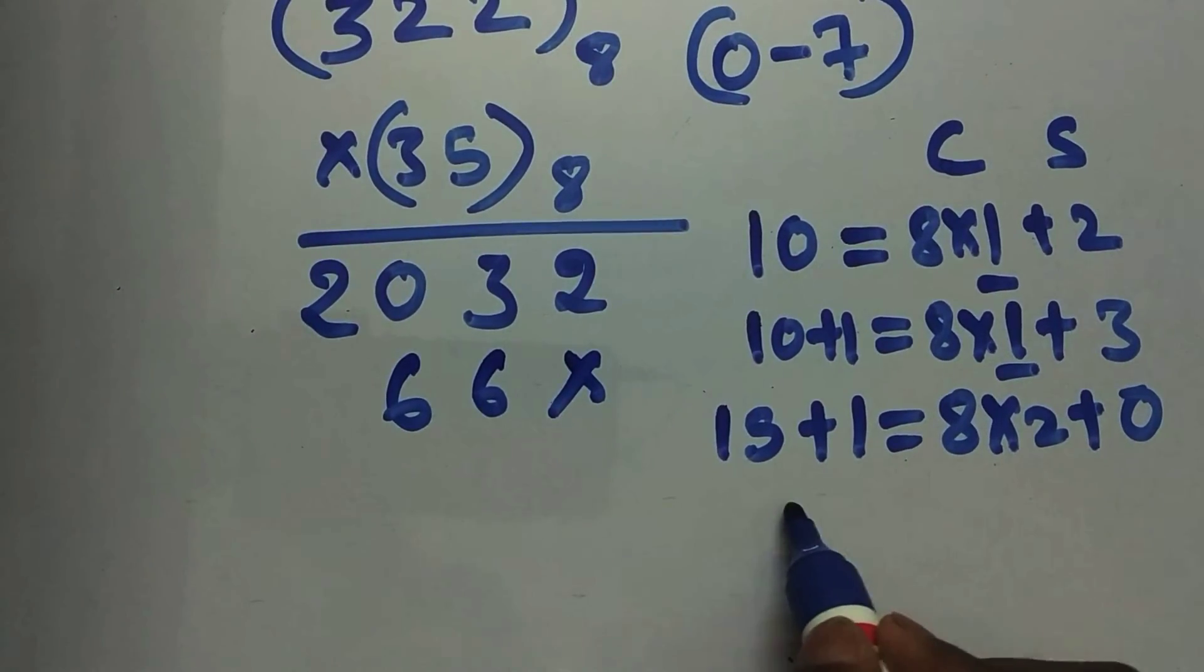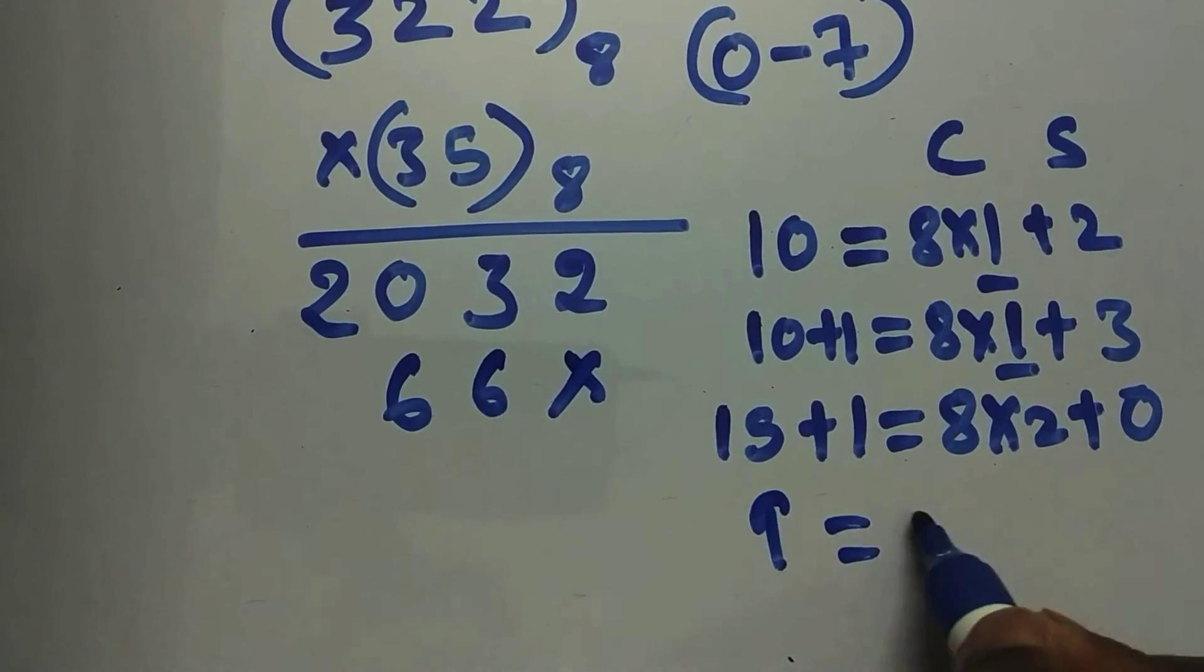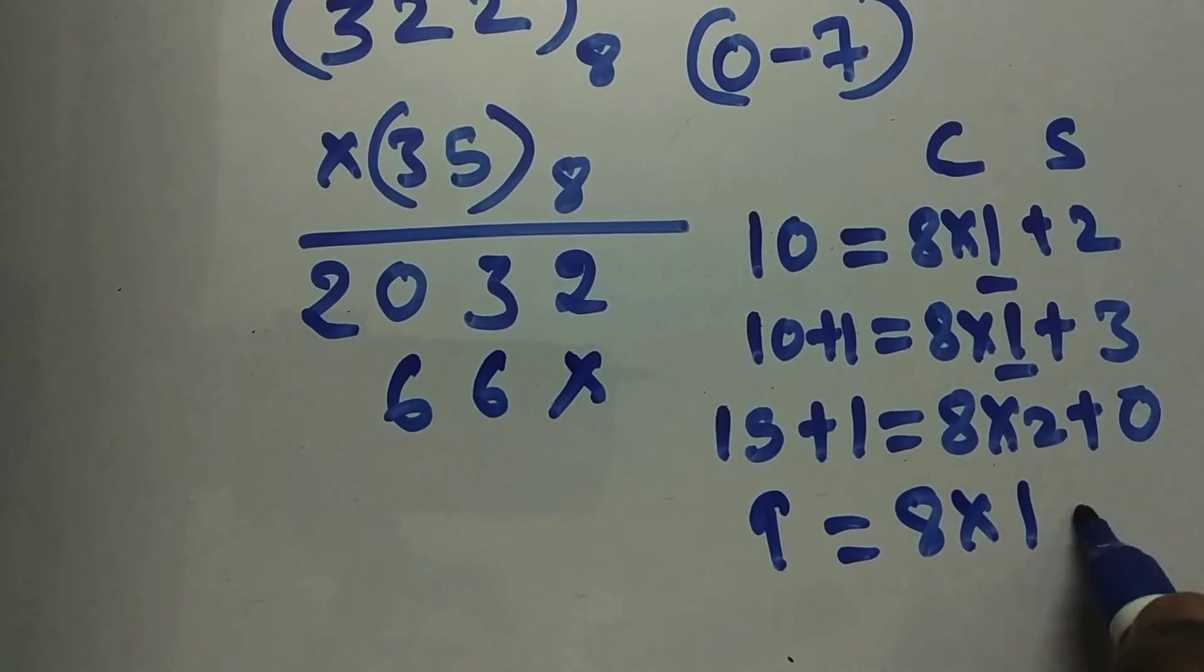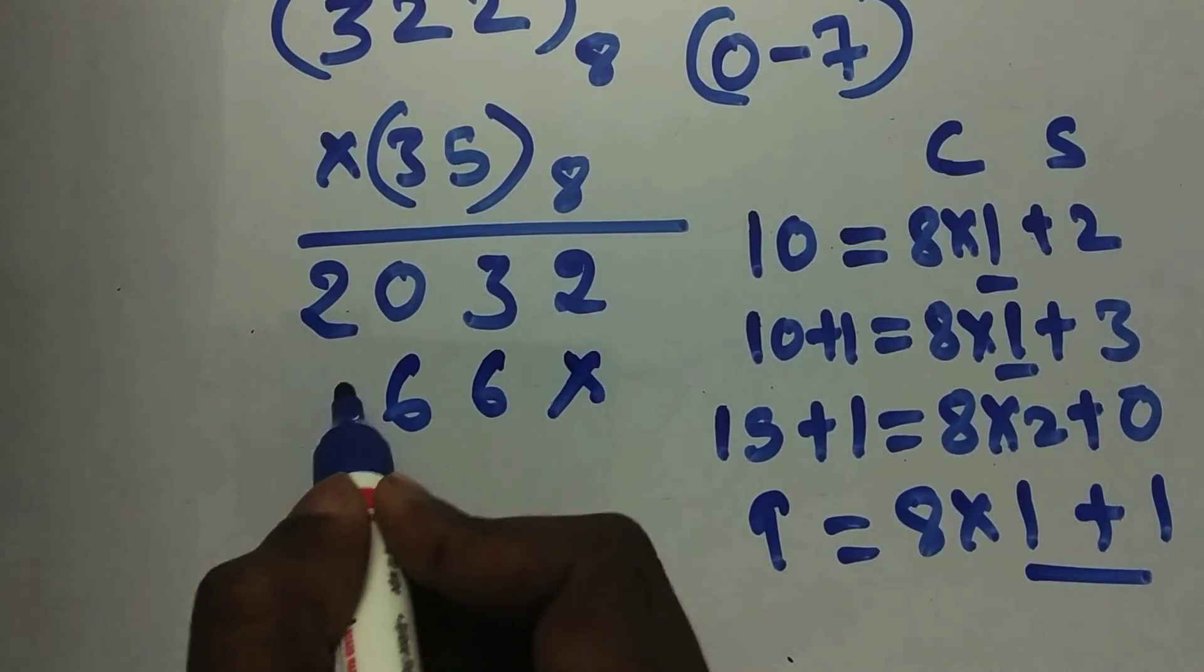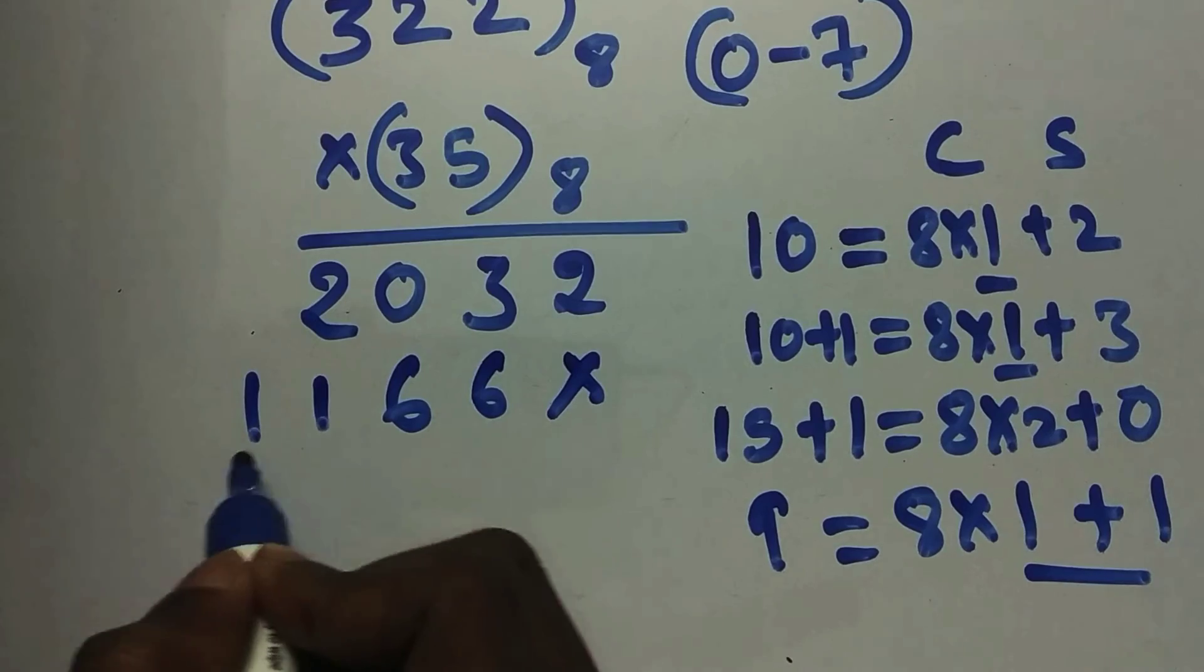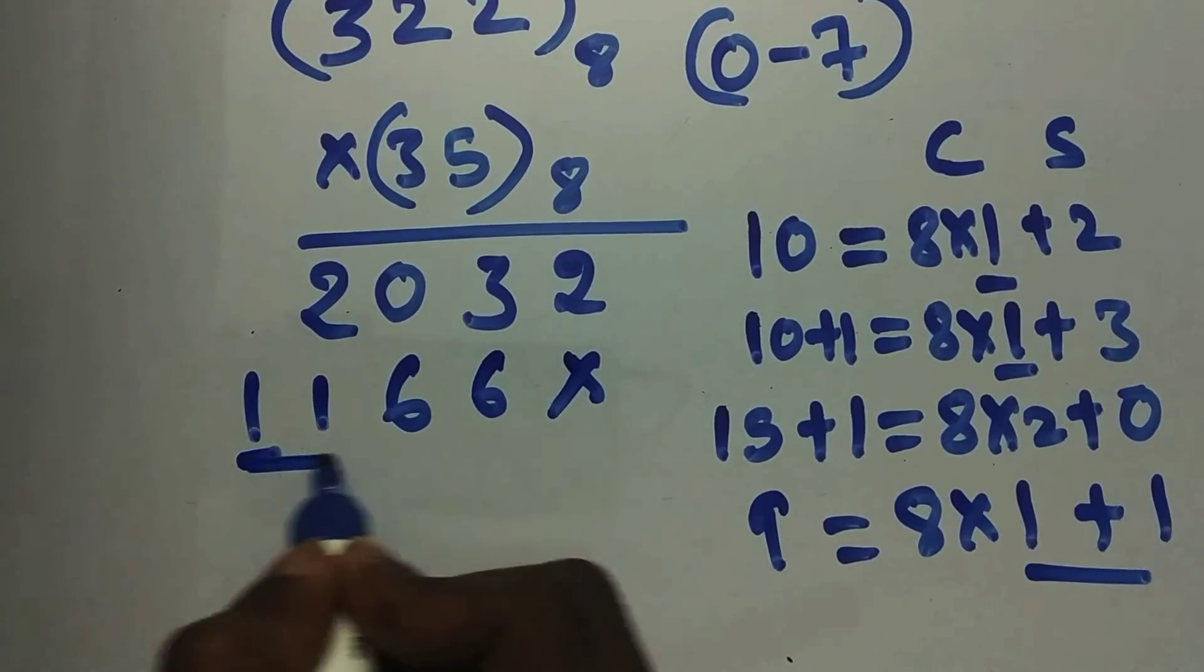So 3 into 3 is 9. So again, 9 we need to represent in octal. So 8 into 1 plus 1. So it's represented as 1 and 1. Since nothing is there, 1 comes over here. Now we need to add it.